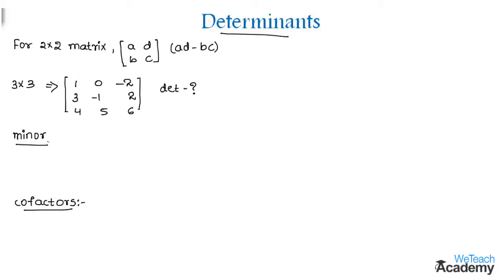And now let me discuss what is a minor of an element. So the minor of an element in this matrix is defined as the determinant of 2 by 2 matrix which is obtained after deleting the row and the column in which the element is present.